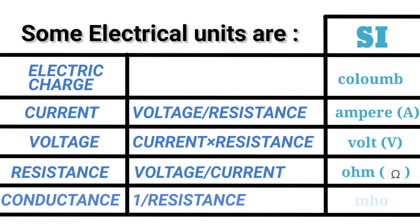Voltage equals to voltage by current: ohm. Conductance equals to one by resistance which equals to mho.